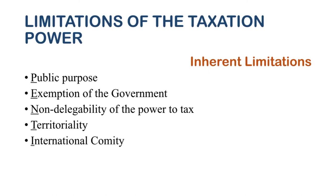The fifth inherent limitation is international comity: an international comity is an agreement between two or more countries which exempts certain individuals, persons, or objects from taxation. For example, foreign diplomats who come to the Philippines will not be subject to tax because of this exemption based on international comity. These five inherent limitations can be memorized through the mnemonic PENTI.